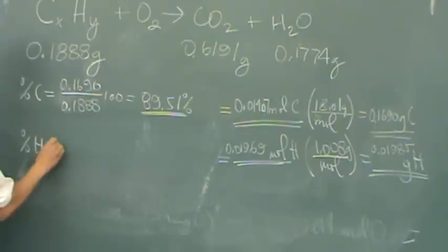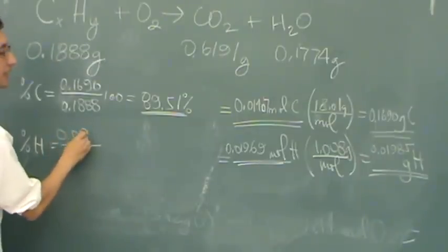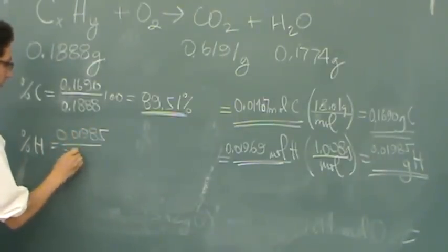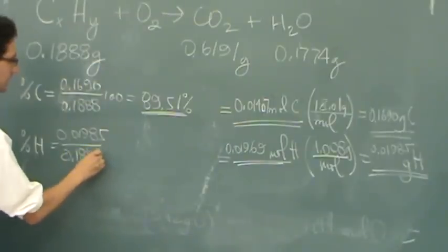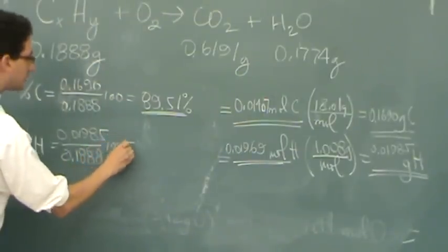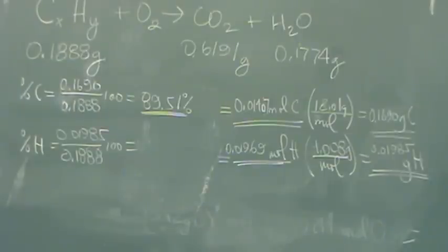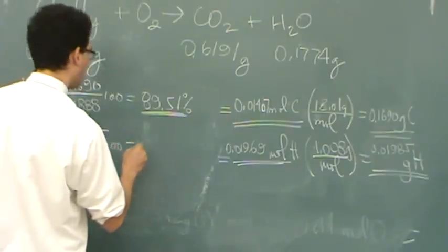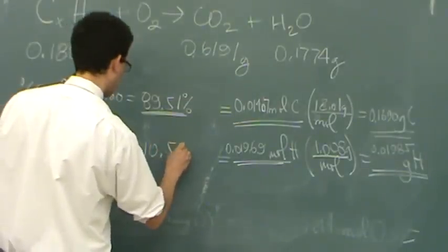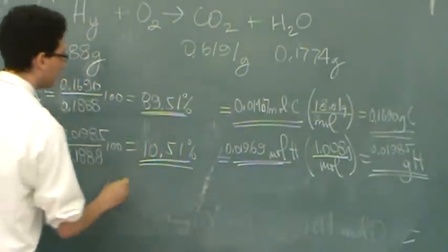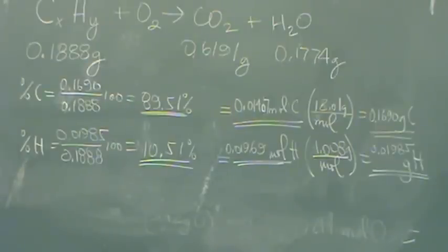Then the percent for hydrogen, same deal. You get the mass of hydrogen, 0.01985, divided by the total, 0.1888, times 100. Let's see what that is, so 0.01985 divided by 0.1888 equals, so it's going to be 10.51%. And you can see, essentially, those will add up to 100%. So that's good. We're all on the right track. That's the percent mass of carbon and hydrogen.